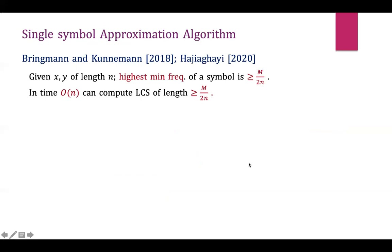We also use a single symbol approximation algorithm. Given strings x and y with m matching pairs, there exists at least one symbol whose frequency is at least m over 2n in both x and y. Constructing an LCS by matching only this symbol gives length at least m over 2n. This highest-frequency symbol can be found in linear time, so the entire procedure runs in linear time.